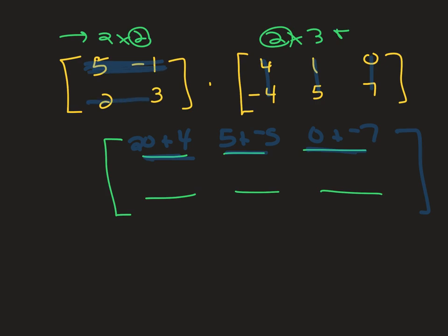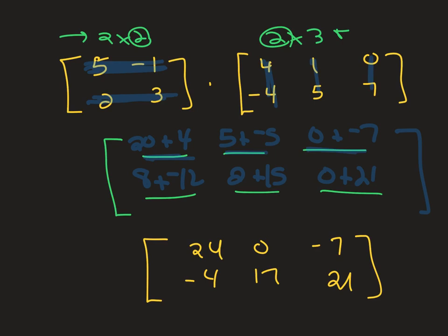Now I'm going to go to the second row, first column over here. Two times four is eight. Three times negative four is negative twelve. Still second row, second row, second column, two times one and three times five. And lastly, last row, last column, two times zero and three times seven. And all you do now to finish up is just add those numbers up and you get 24, zero, negative seven, negative four, 17 and 21. That's a 21. My marker didn't come up.